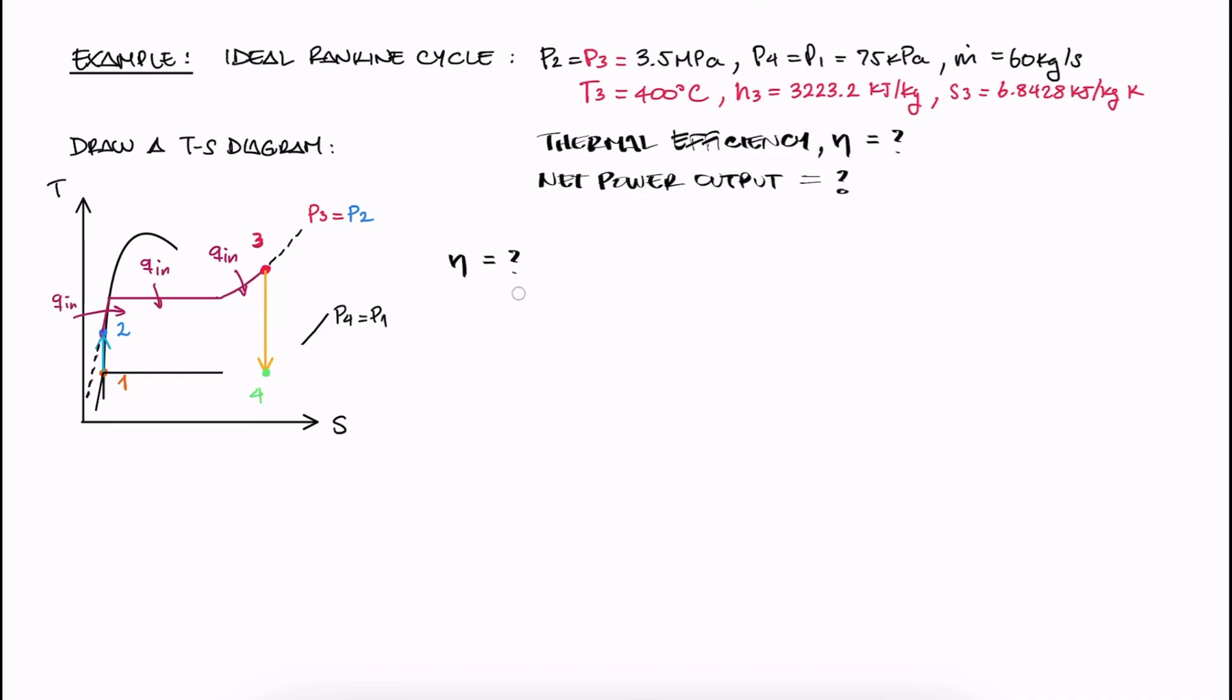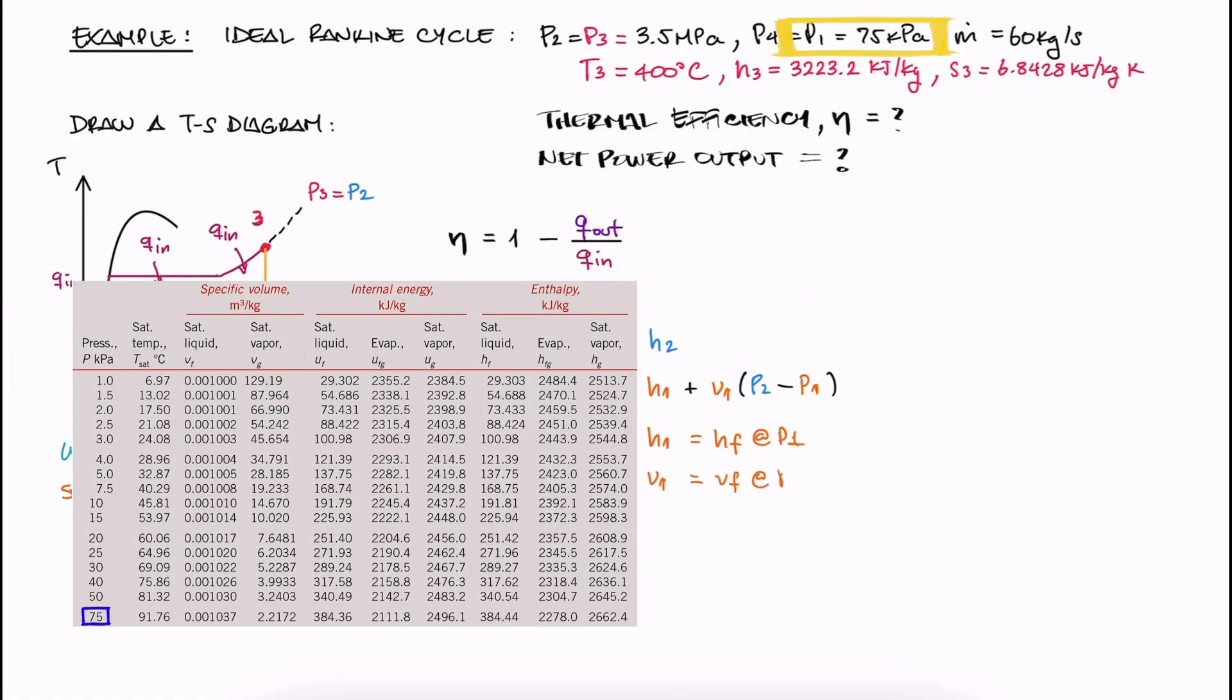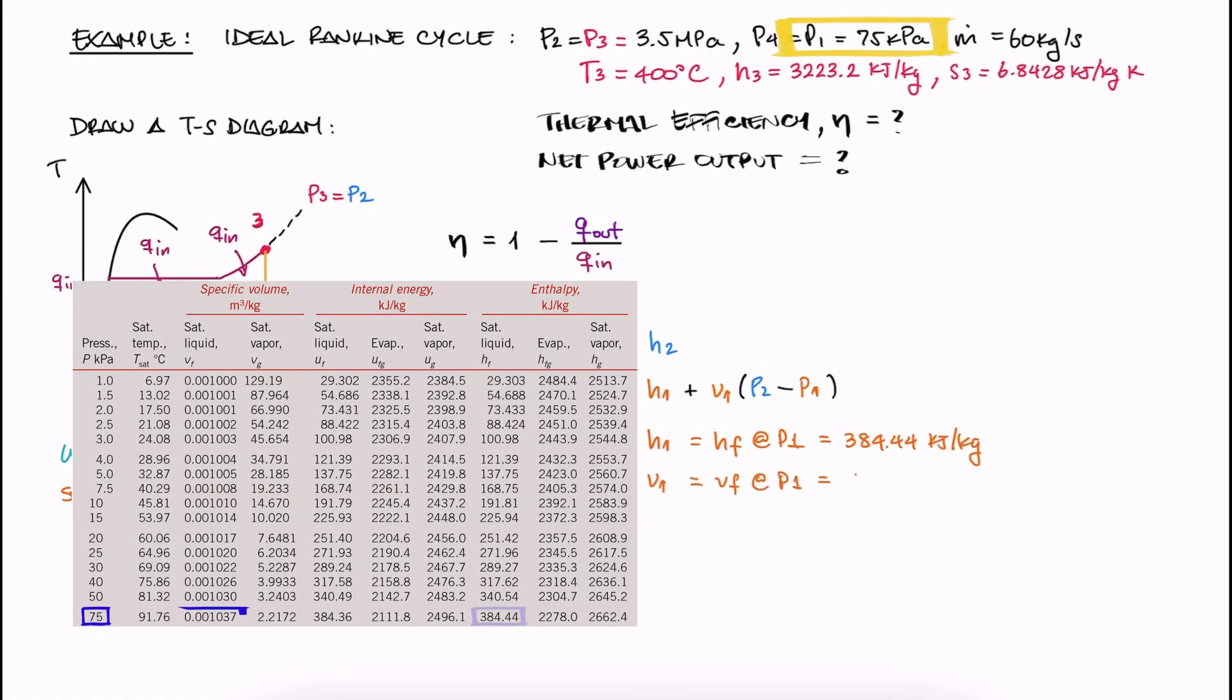The thermal efficiency is still 1 minus Qout over Qin, so we need Qout and Qin. To calculate Qin, we need the specific enthalpy at 3 and 2. H3 is H at P3 and T3 in the superheated tables. And since the work of the pump is both V delta P and the change in enthalpy, H2 is H1 plus the work. To find H1, we need the saturated liquid value of the enthalpy at that pressure, meaning Hf at P1. And V is just V1 from what I noted today, which is the saturated liquid specific volume Vf at P1.